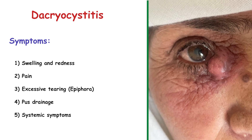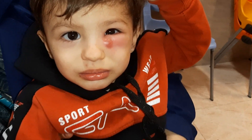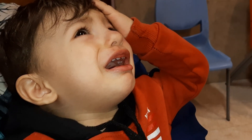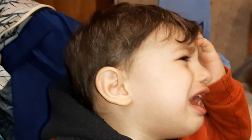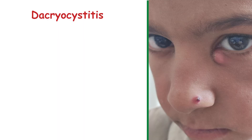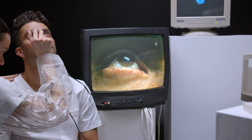The area around the lacrimal sac may also be tender to the touch. If dacryocystitis remains untreated, it may progress and form an abscess. Sometimes the infection around the eye can spread further to the surrounding tissue and cause a more severe condition called orbital cellulitis.